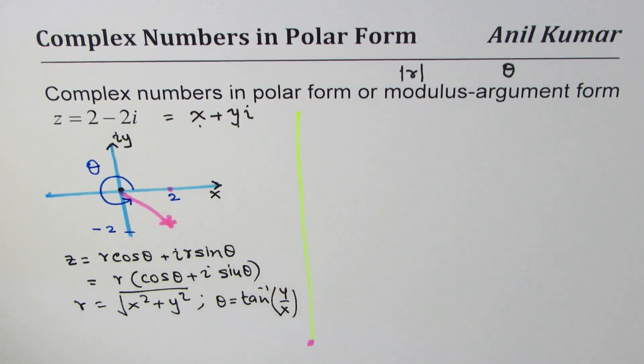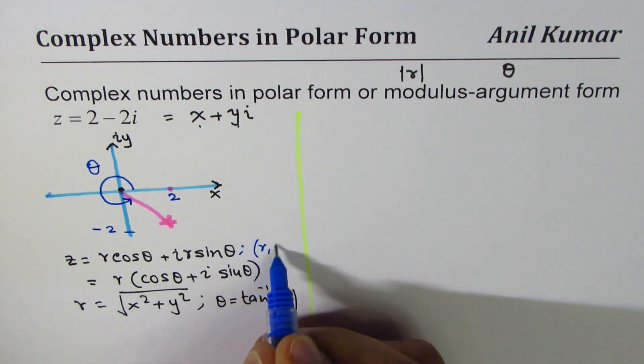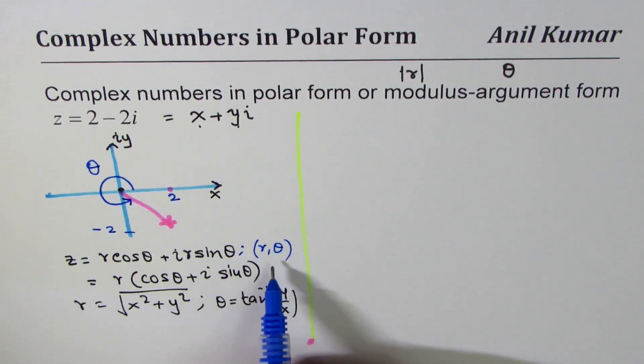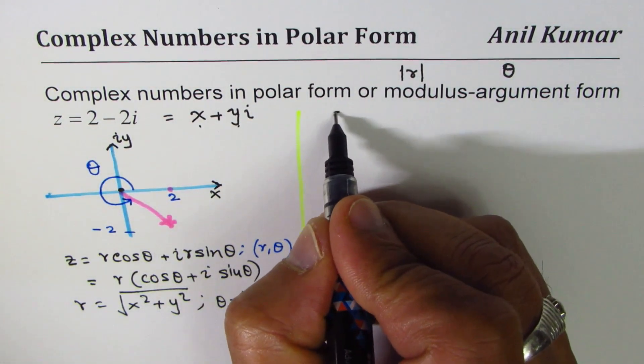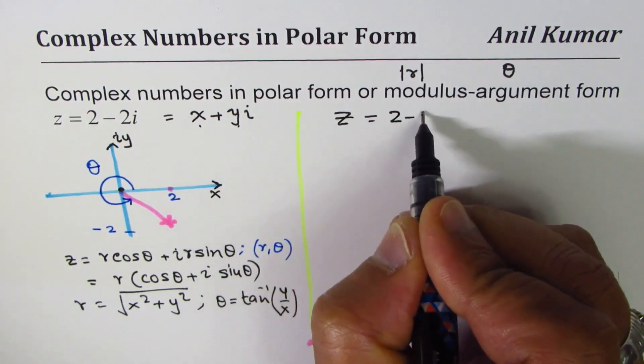Once you find r and theta you could always write in complex form. We may also write this as r and theta, that is also polar form. Okay, so let's begin our exercise. We are given the complex number z equals 2 minus 2i.